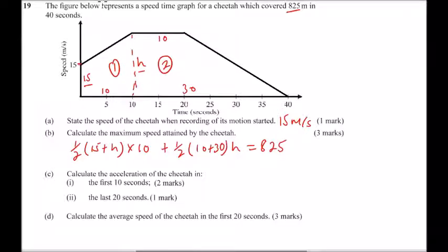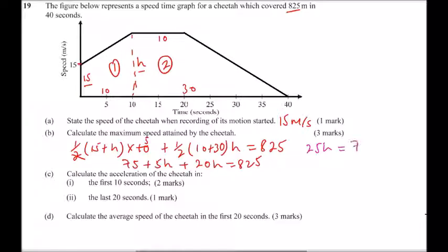Computing this: dividing by 2 gives 5, so the first part becomes 75 plus 5h, and the second part gives plus 20h. Adding them: 75 plus 25h equals 825. Subtracting 75 from both sides gives 25h equals 750. Dividing both sides by 25 gives h equals 30 meters per second. So the maximum speed attained by the cheetah is 30 meters per second.